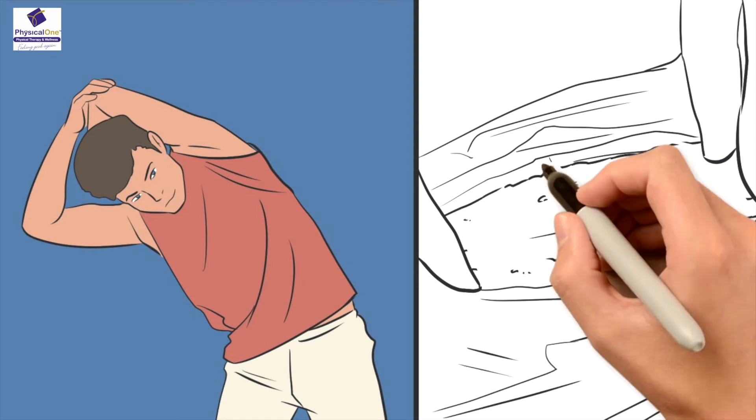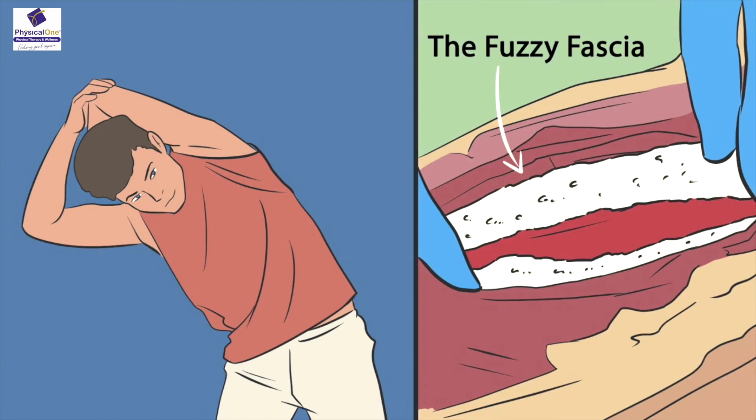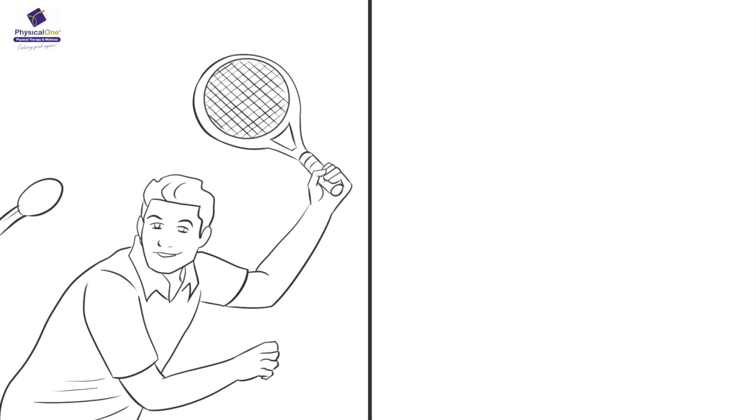The fuzzy fascia is the fascia that surrounds muscles and other tissues. When you stretch your body in the morning, this fuzzy fascia melts and the restricted surfaces can move freely again.